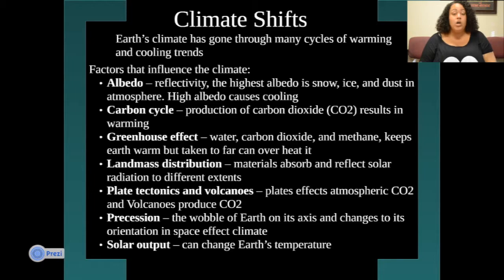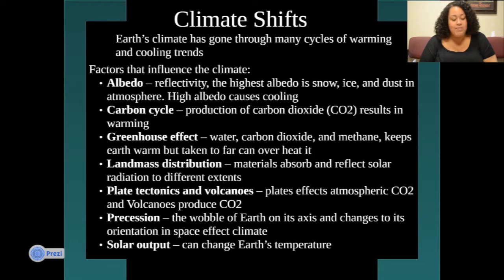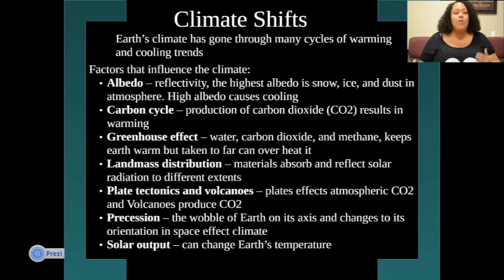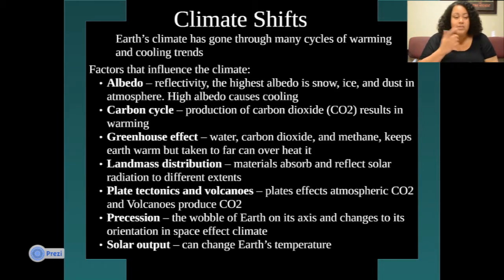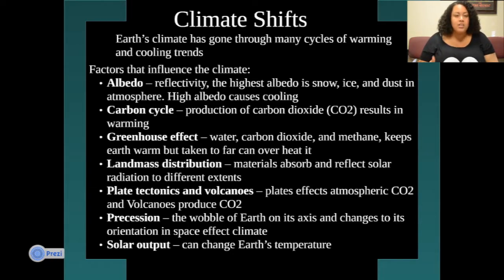Volcanoes and tectonic plates also produce carbon dioxide, which, entering the atmosphere, affects the climate even more. The tilt of Earth on its axis also changes the orientation — how the Earth is situated on its axis changes how the sun and our weather are affected, including our winters and summers. Solar output can also change the Earth's temperature: if the sun changes by a couple degrees, we'll definitely feel it on Earth, and solar flares change up Earth's climate a bit.